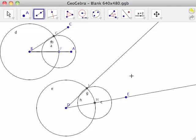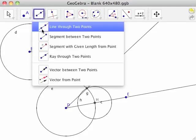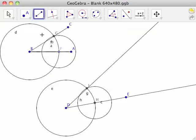We can use congruent triangles to explain why we know that angle D is congruent to angle B. Select the segment between two points tool from the line toolbar and create line segment GF to form triangle BGF and create line segment IH to form triangle DIH.